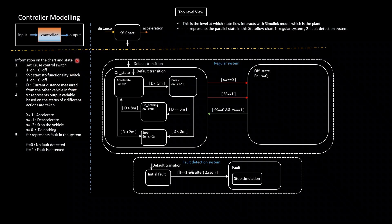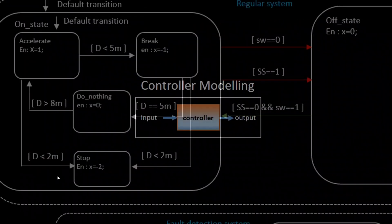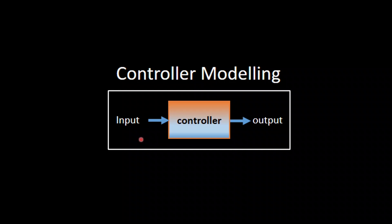We need to understand what a controller modeling is and what are the different key aspects of it. Basically, a controller is a device which takes some input and with the help of some control logic it gives an output which drives the plant. The controller input comes from the plant, which is the actual system, and the controller output goes into the plant as the control signal, helping the controller to keep the plant performing its desired behavior.